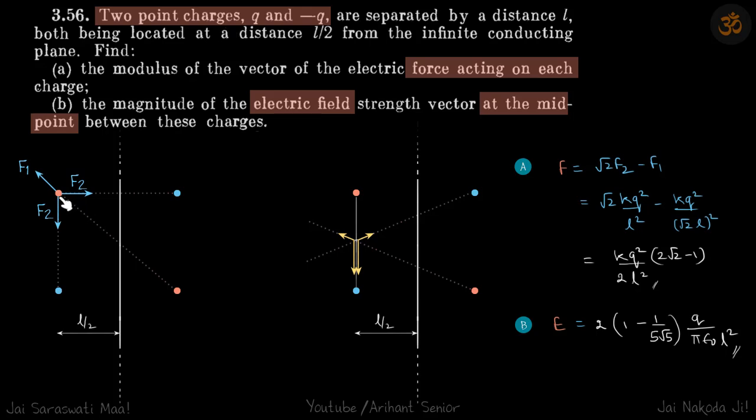We have two charges, +q and -q, placed in front of an infinite conducting sheet. By the image method, the negative of these charges can be placed on the other side symmetrical to it.